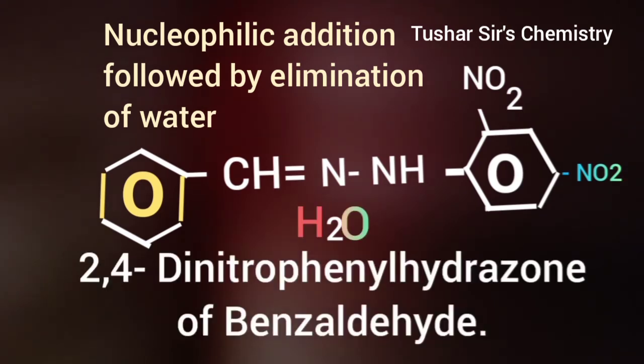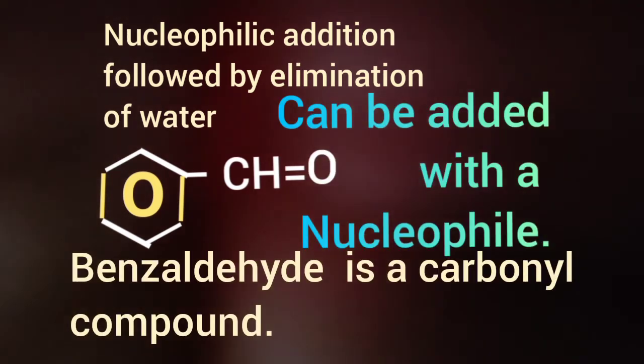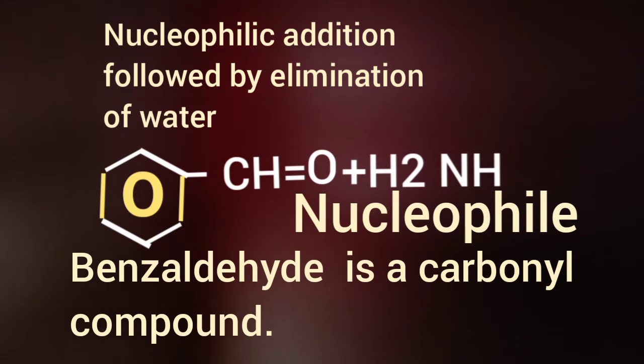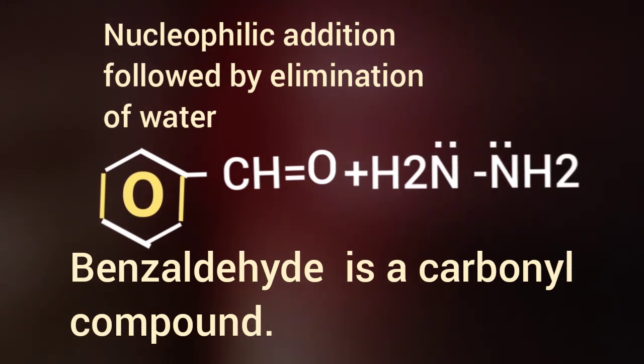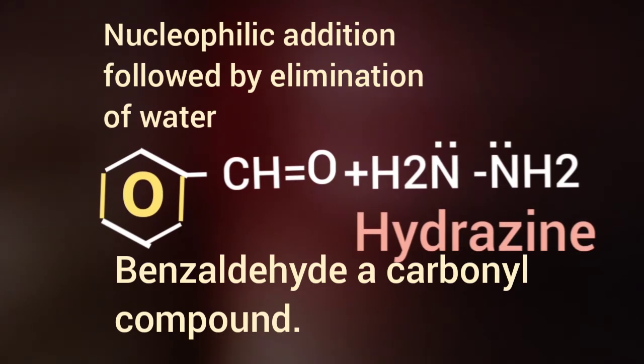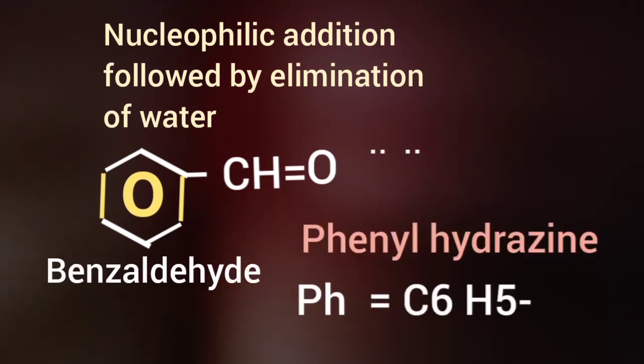Let us discuss the reaction in detail. Benzaldehyde can be added with a nucleophile. Ammonia is a nucleophile because there is a lone pair on nitrogen atom. When H atom of ammonia is replaced by NH2 group, hydrazine is produced. Hydrazine is also a nucleophile. When H of hydrazine is replaced by a phenyl group, we will get phenylhydrazine.